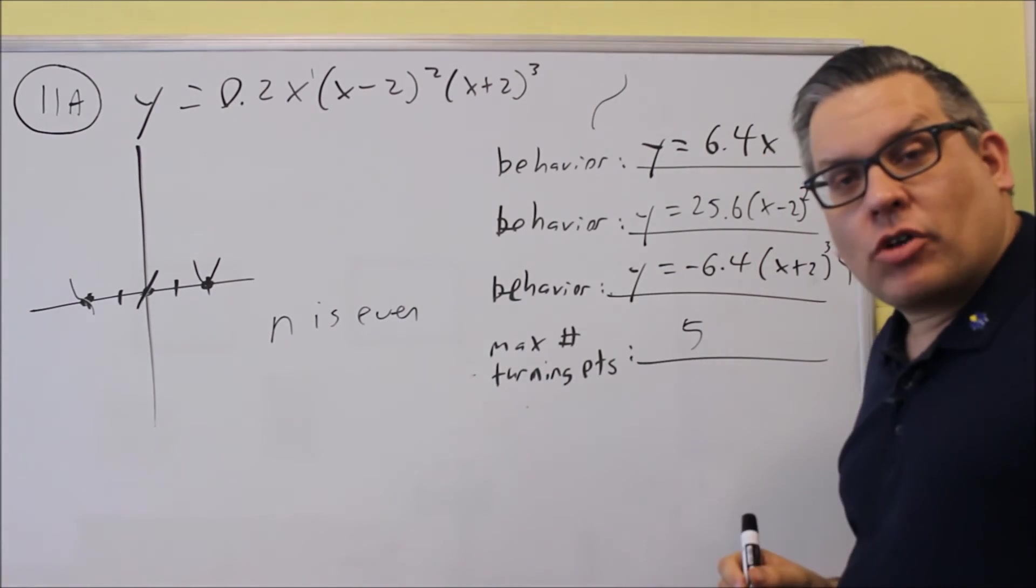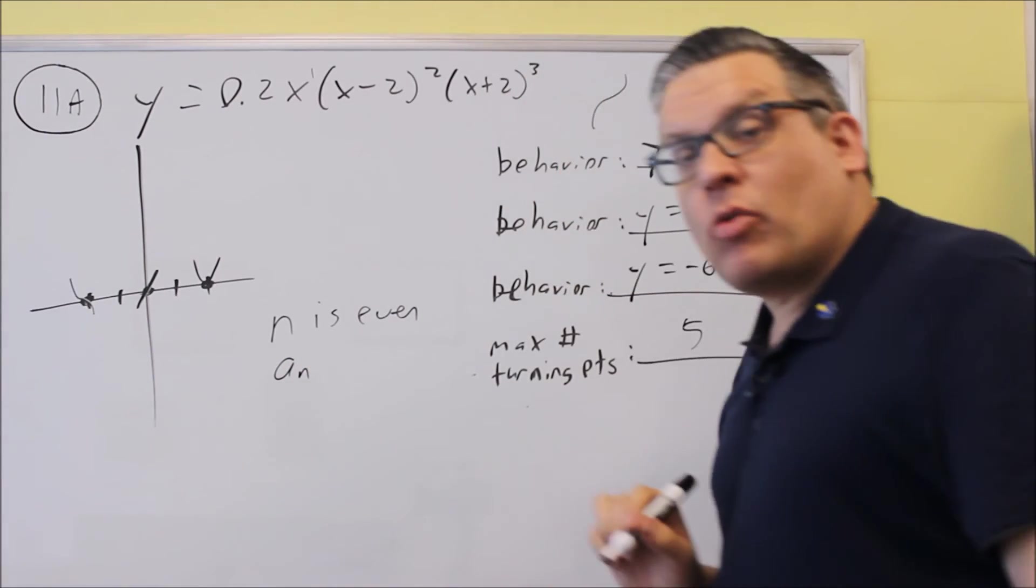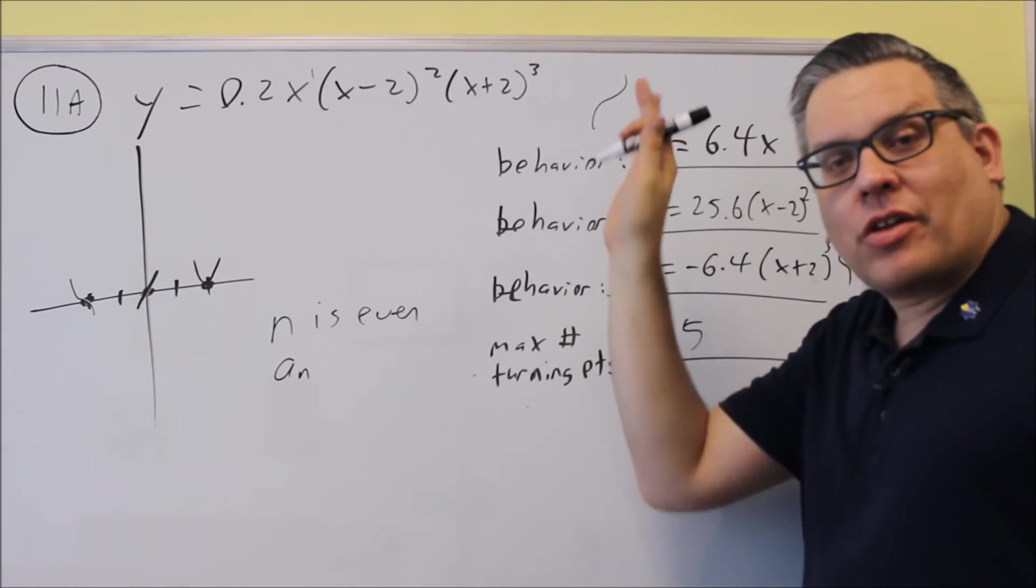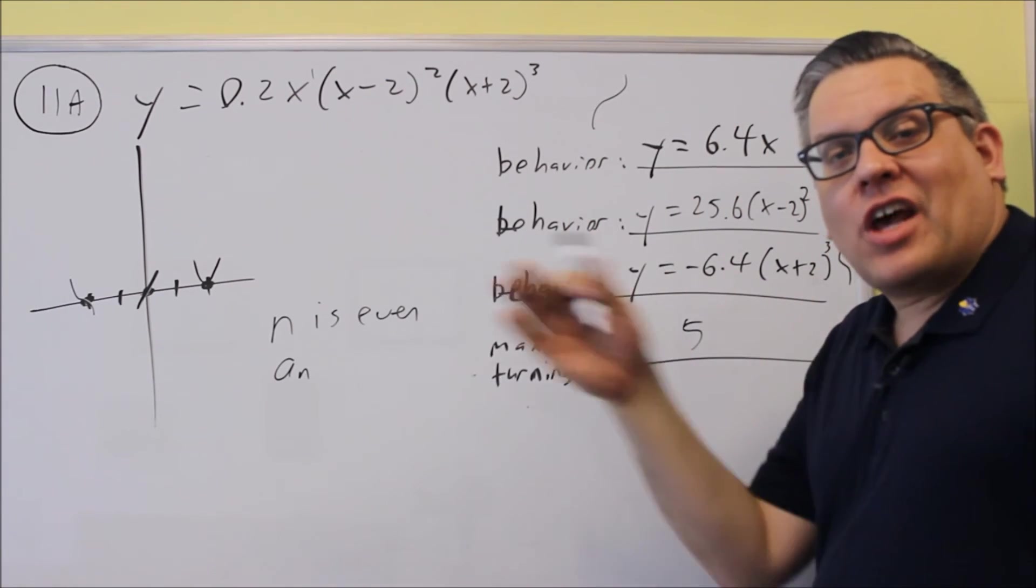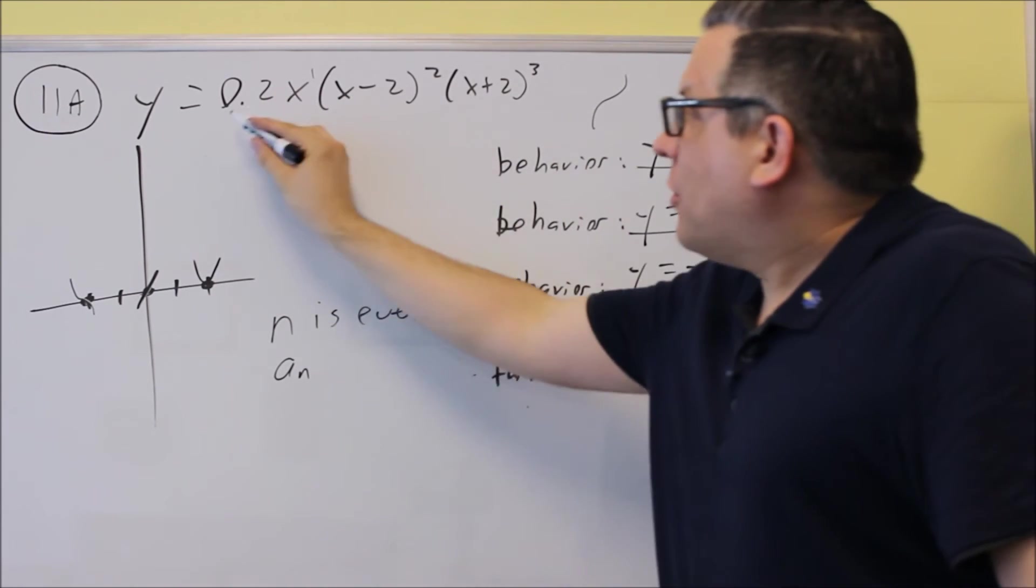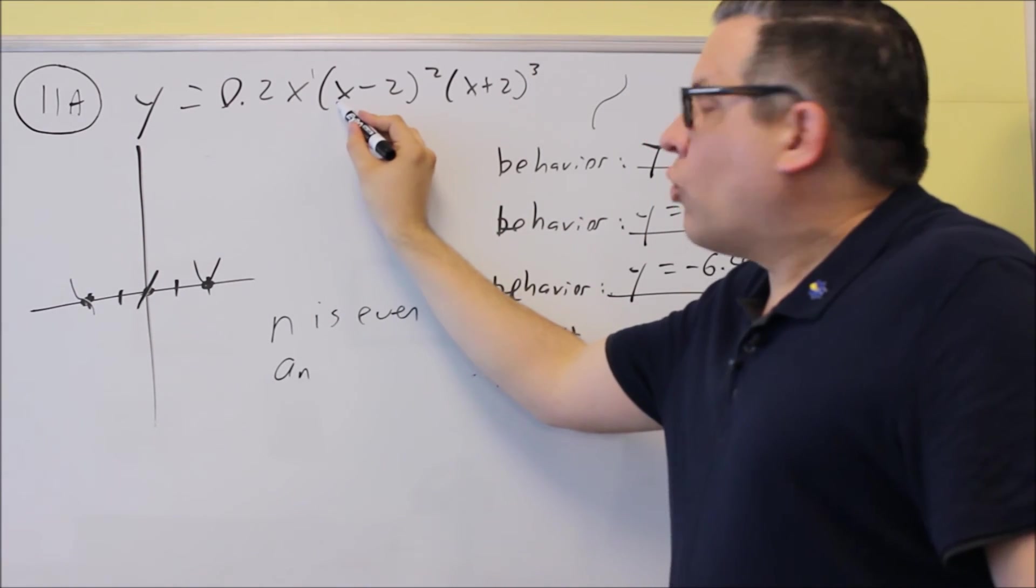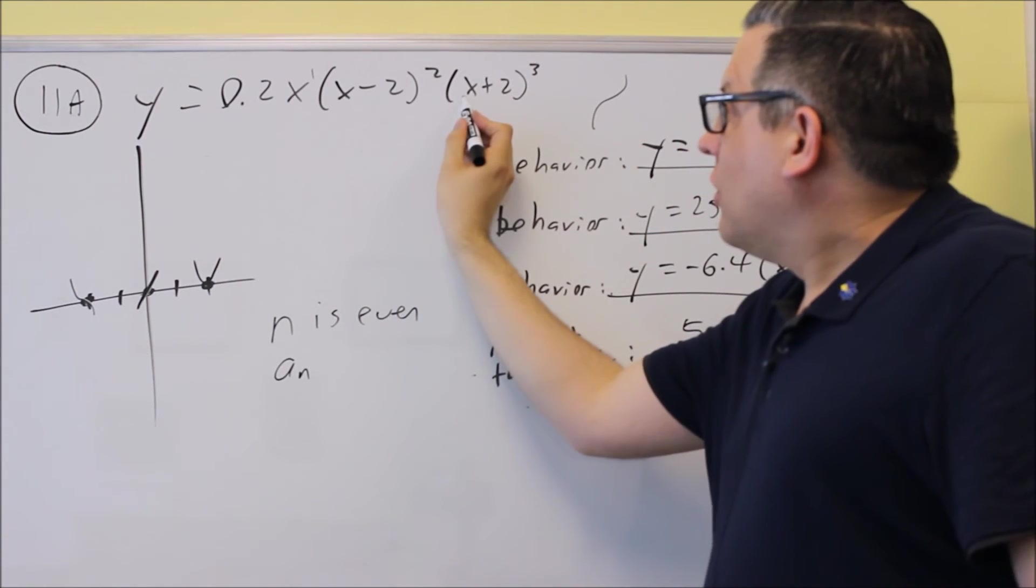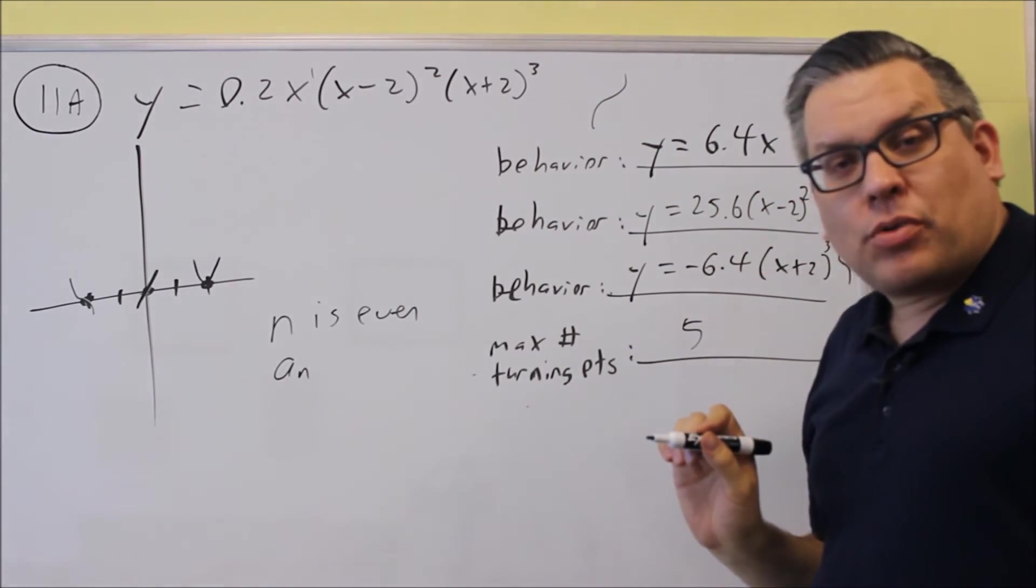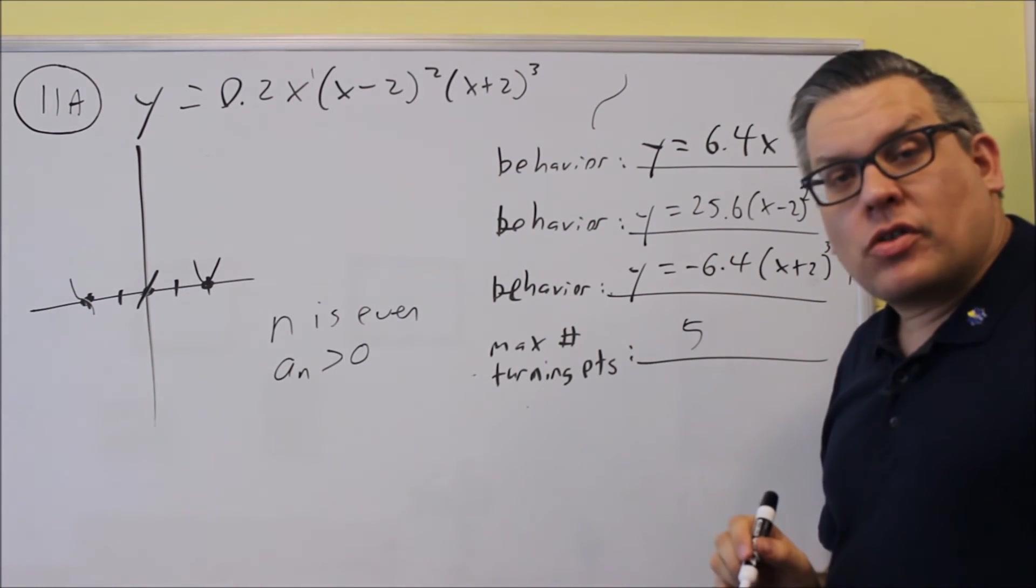For this case, the degree was 6, so we have n is even. By adding that we had a degree of 6. Now the a of n, let's talk about what that is. Now the a of n would be the, if I multiplied all this stuff together, it would be the number in front of the x that would have the power of 6. So instead of multiplying all that out, we can actually do that by just analyzing each number. If this number is positive, the one in front of the x is positive, the number in front of the x there is positive.